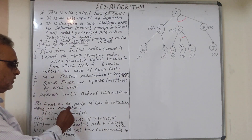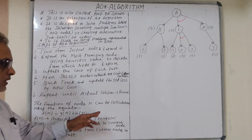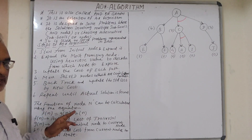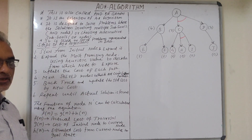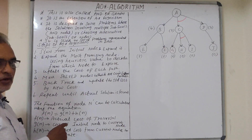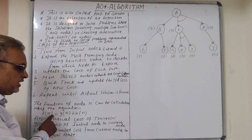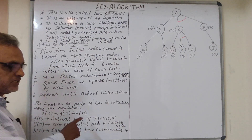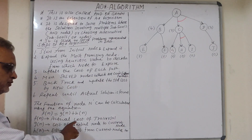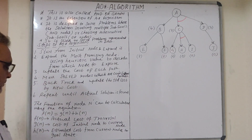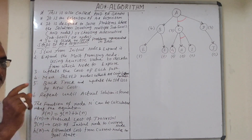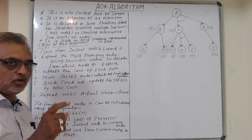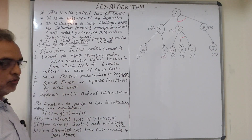The evaluation function of each node can be calculated using the same equation used in the A* algorithm: f(n) = g(n) + h(n). Here f(n) is the actual cost of the traversal, g(n) is the cost from the initial node to the current node, and h(n) is the estimated cost from the current node to the goal node or goal state.